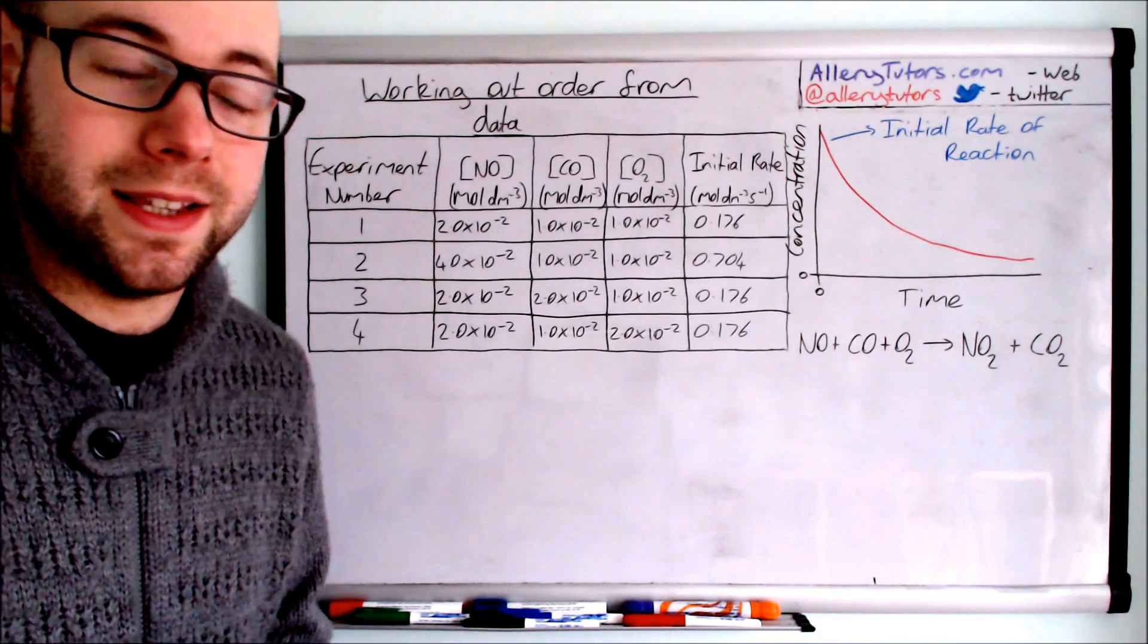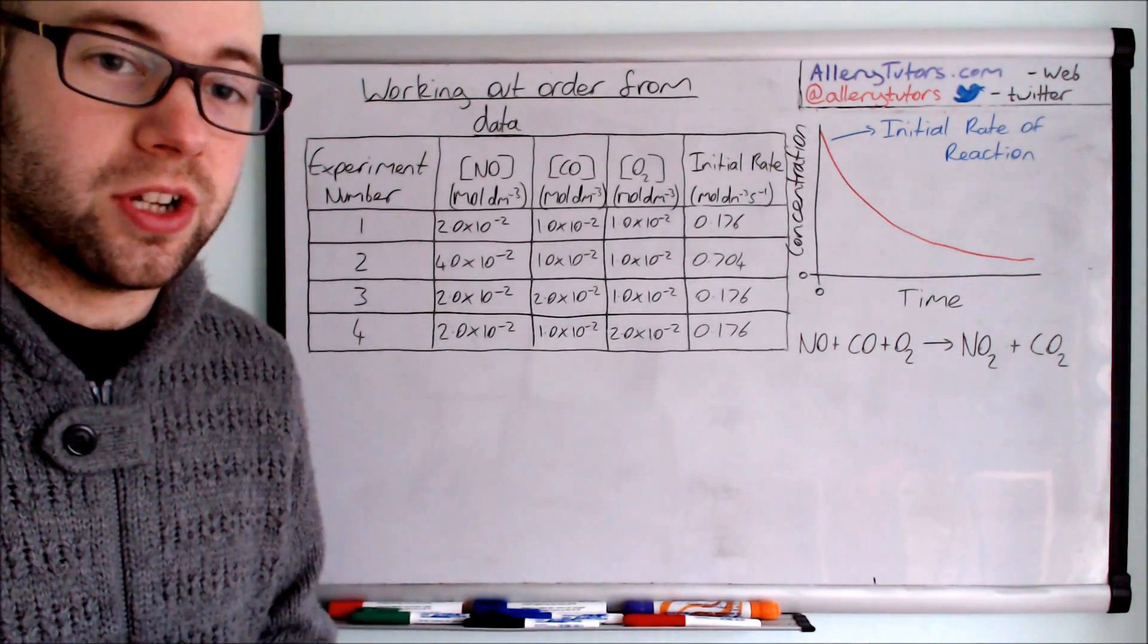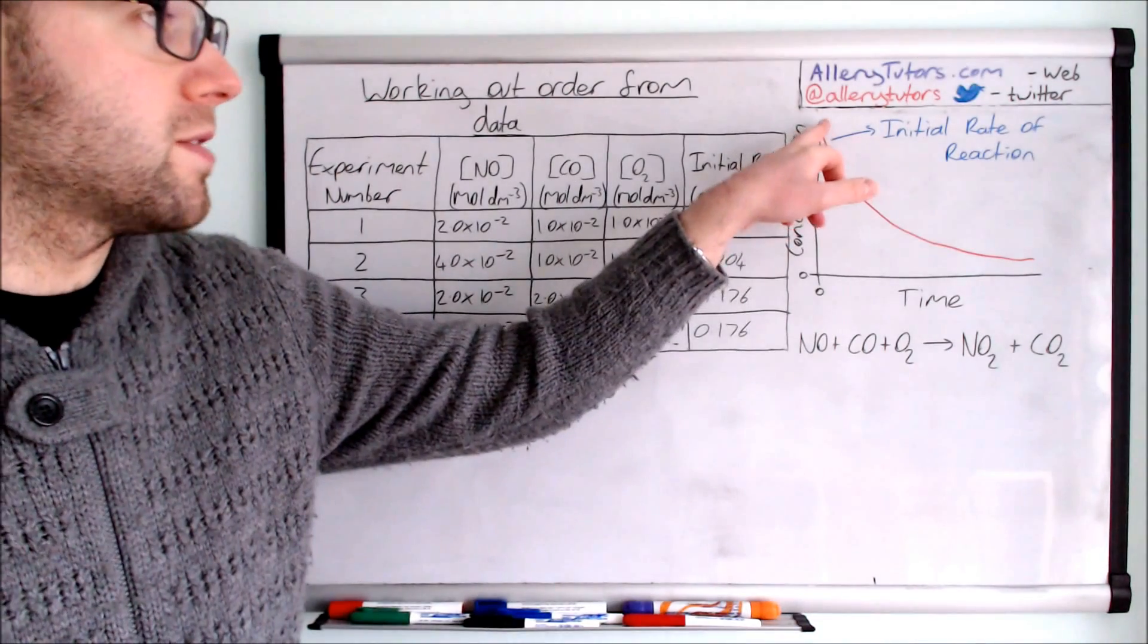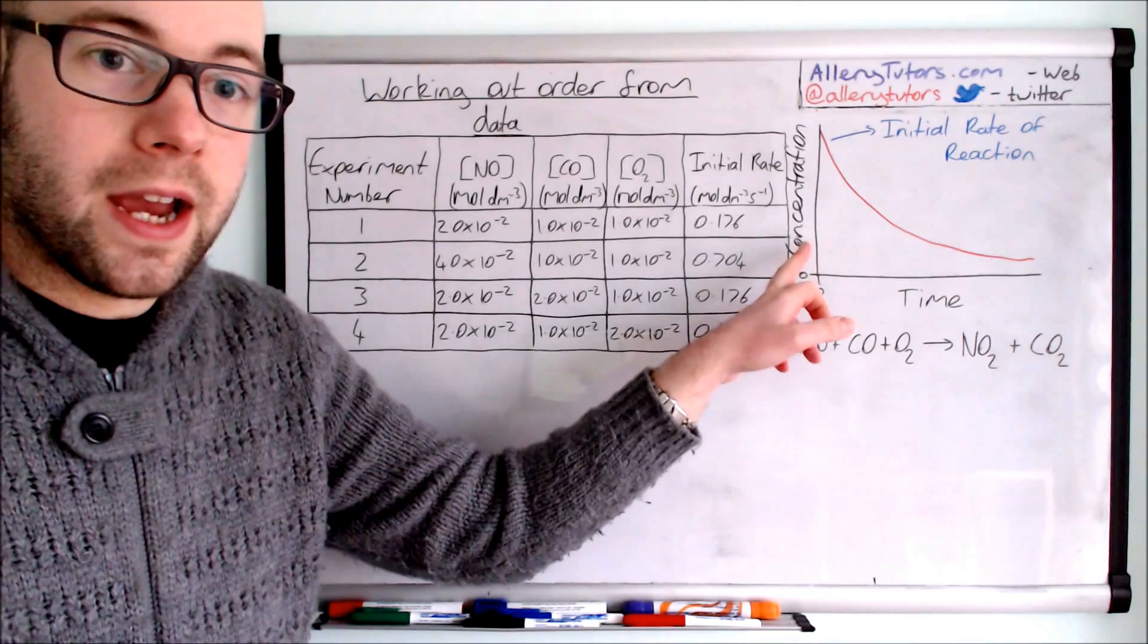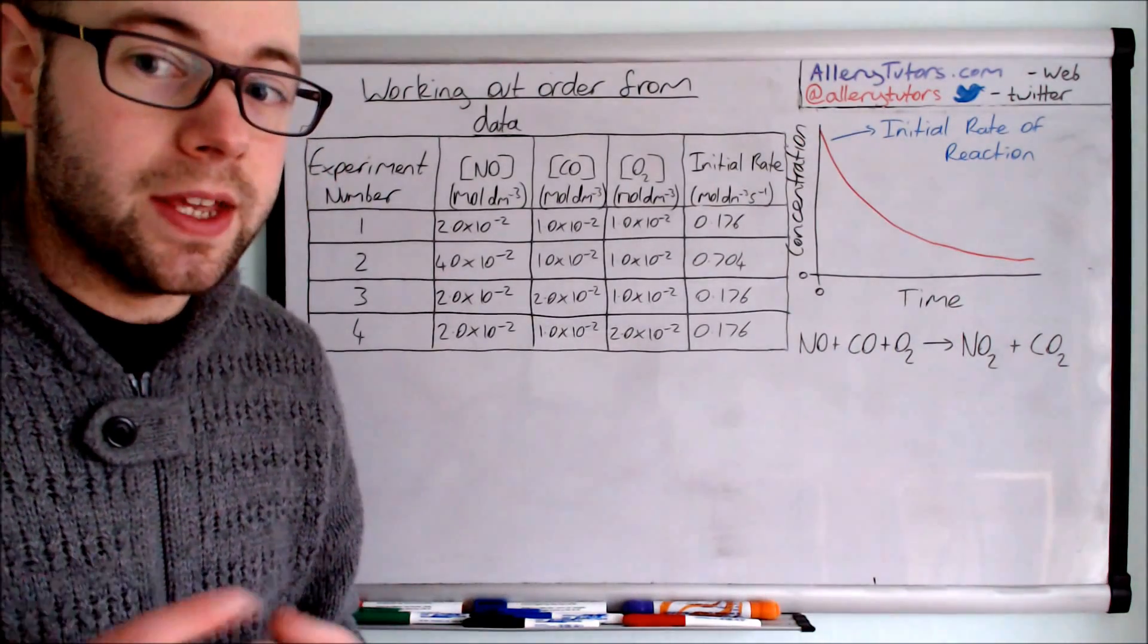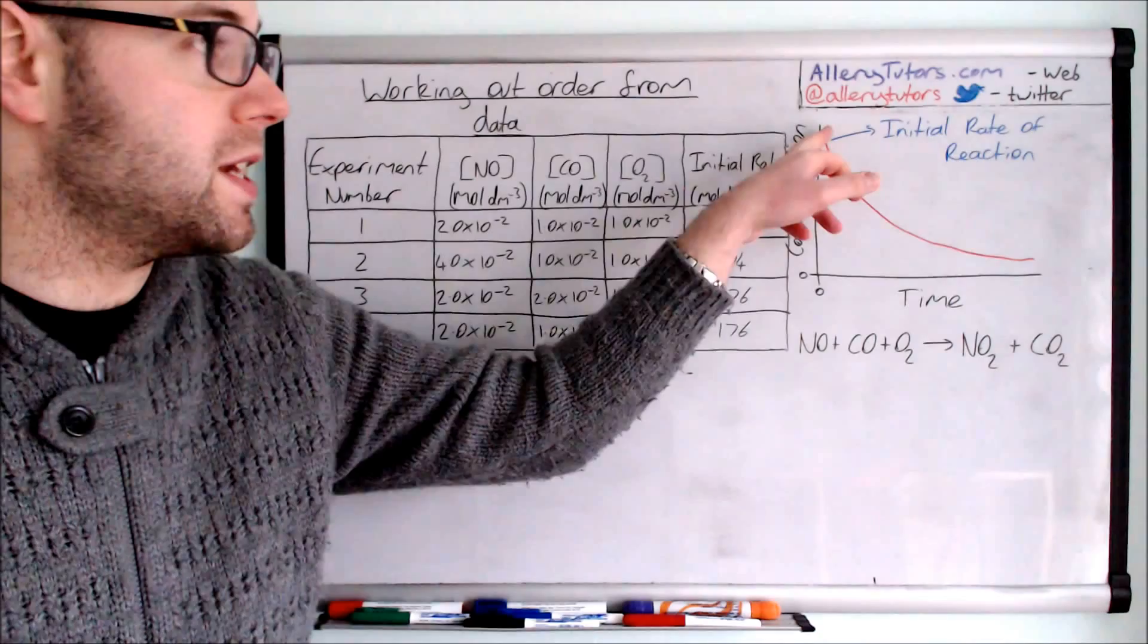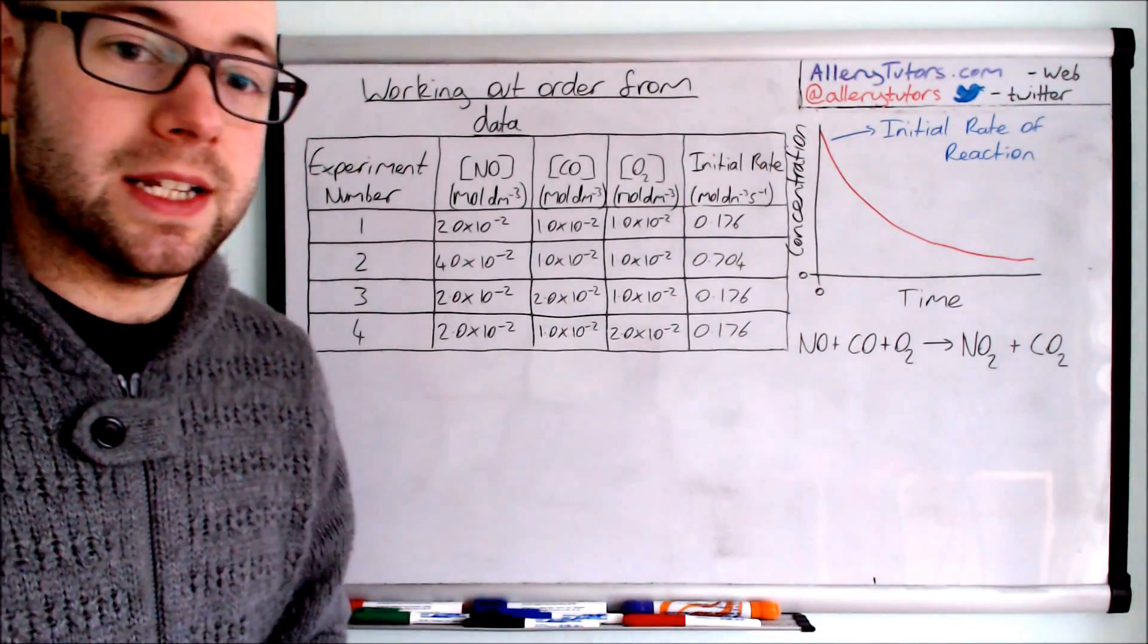Initial rate is basically the rate right at the start of the reaction when it just starts. So this is it right here. If we have this profile here you can see we've got concentration of the reactants, they're being used up so they're decreasing over time. The initial rate of reaction is the one right at the top of the equation and right at the start. So this is what this data tells us here.